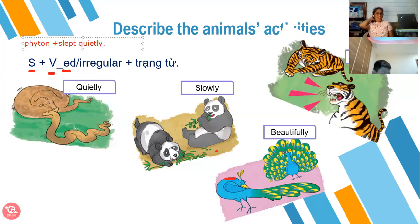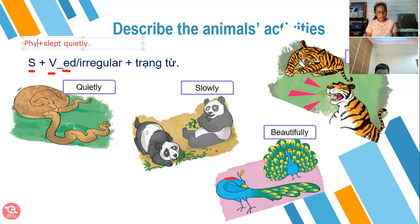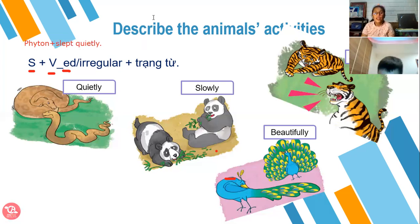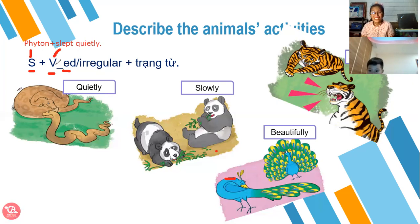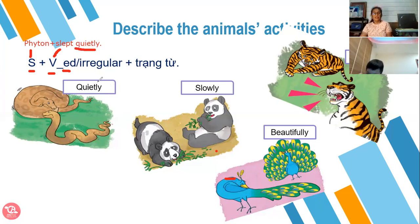Can you see that? Python slept quietly. Subject here is python. Verb here is slept. Look at the python slept quietly. Subject: python. Verb: slept — this is past tense. And quietly — this is the adverb.